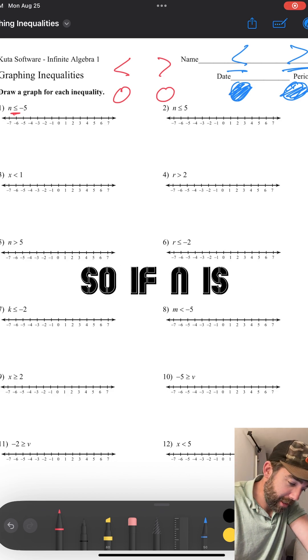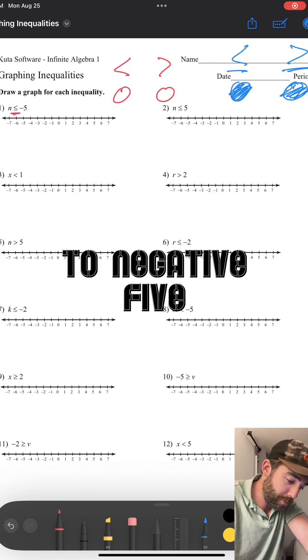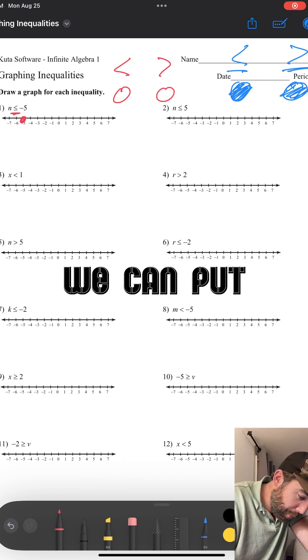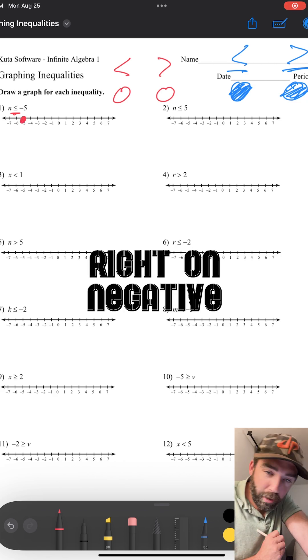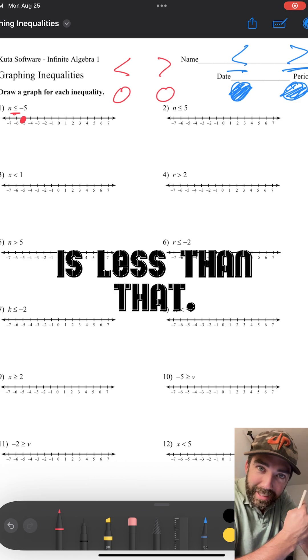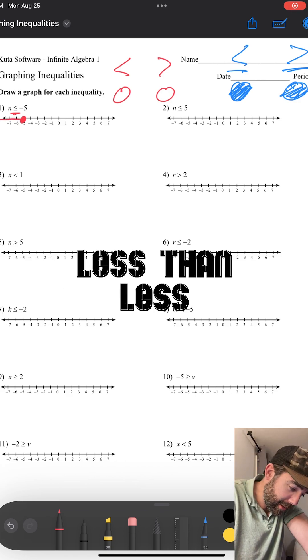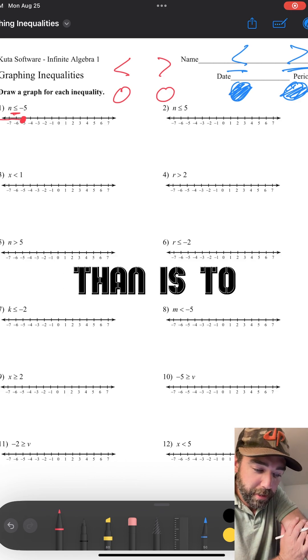Here we go. So if N is less than or equal to negative five, we can put a closed circle right on negative five and N is less than that. So we're going to go less than. Less than is to the left, greater than is to the right.